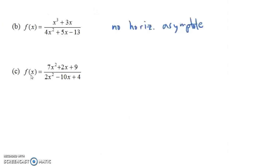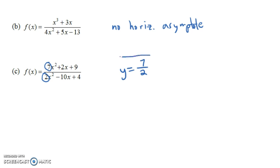Our last example is f(x) = (7x² + 2x + 9) / (2x² − 10x + 4). Notice they have the same degree — both are quadratic, degree 2, polynomials. So our horizontal asymptote is going to be y equals the leading coefficient of the numerator, which is 7, over the leading coefficient of the denominator, which is 2. So the horizontal asymptote is the line y equals 7/2.